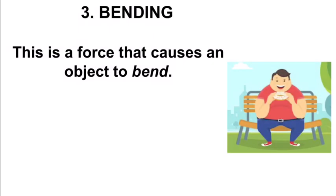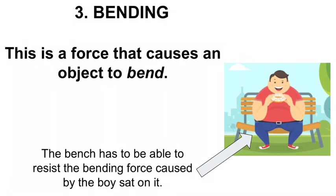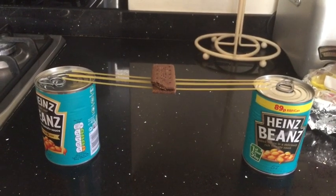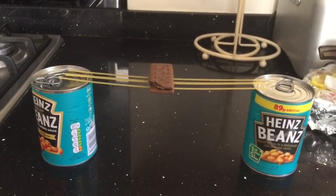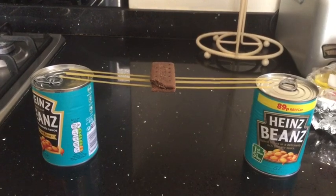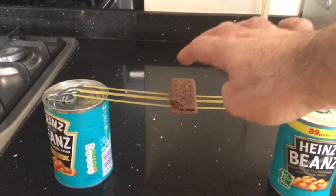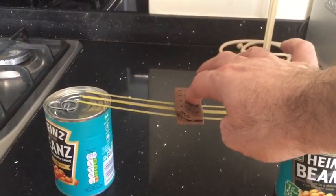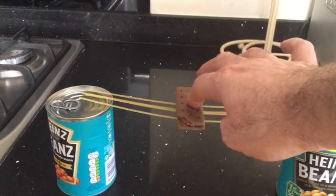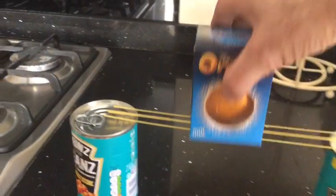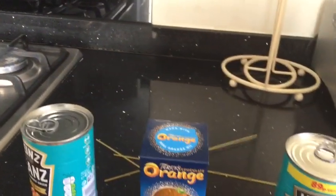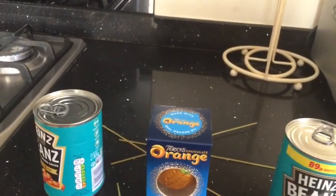Force number three is bending. Some objects need to be able to withstand bending forces, like the bench there, otherwise it would break. I put four pieces of spaghetti between two big bean tins and put a biscuit on top — the biscuit causes the spaghetti to bend. If I take that off and put a chocolate orange on, I don't think the spaghetti will be able to resist the bending forces. There you go — it's broken.